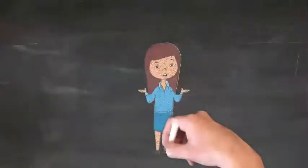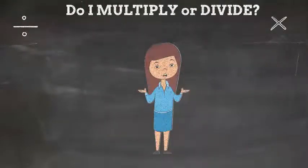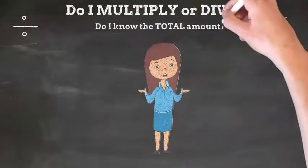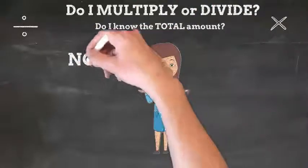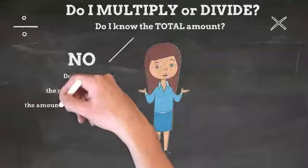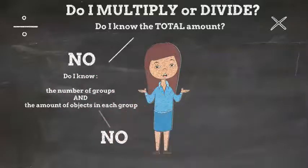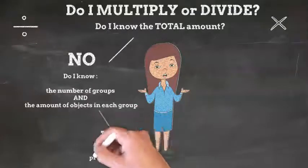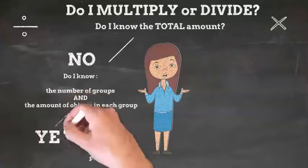Here's a graphic organizer to help determine whether you should multiply or divide. The first question you want to ask yourself is, do I know the total amount? If your answer is no, then ask yourself, do I know the number of groups and the number of objects in each group? If your answer is no to those, then something may have gone wrong. Check the problem again. But if your answer is yes, then multiply.